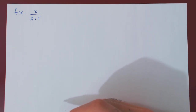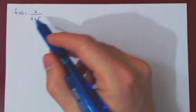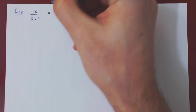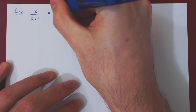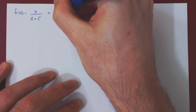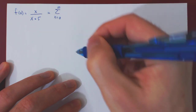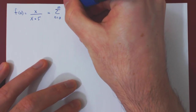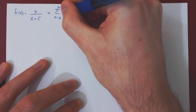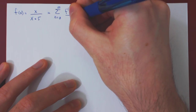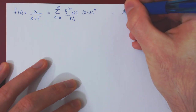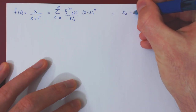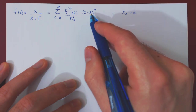In this video, we will find the Taylor series of the function x over x plus 5 centered at 2. If you recall, given a function f of x, the Taylor series is given by the sum from 0 to infinity of the nth derivative at the center of the expansion — here we take the center to be 2 — over n factorial, times x minus the center to the n. So x₀ is equal to 2, the center of the expansion is 2.